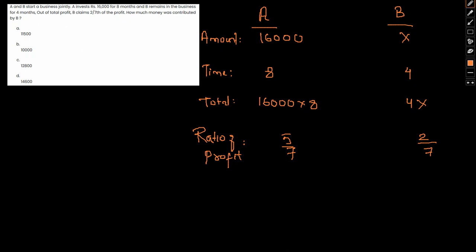So therefore what we can write is 16,000 into 8 by 4X is equal to 5 by 7 into 2 into 7. It gets cancelled out by 2. So therefore X can be actually written as 16,000 into 4 by 5.